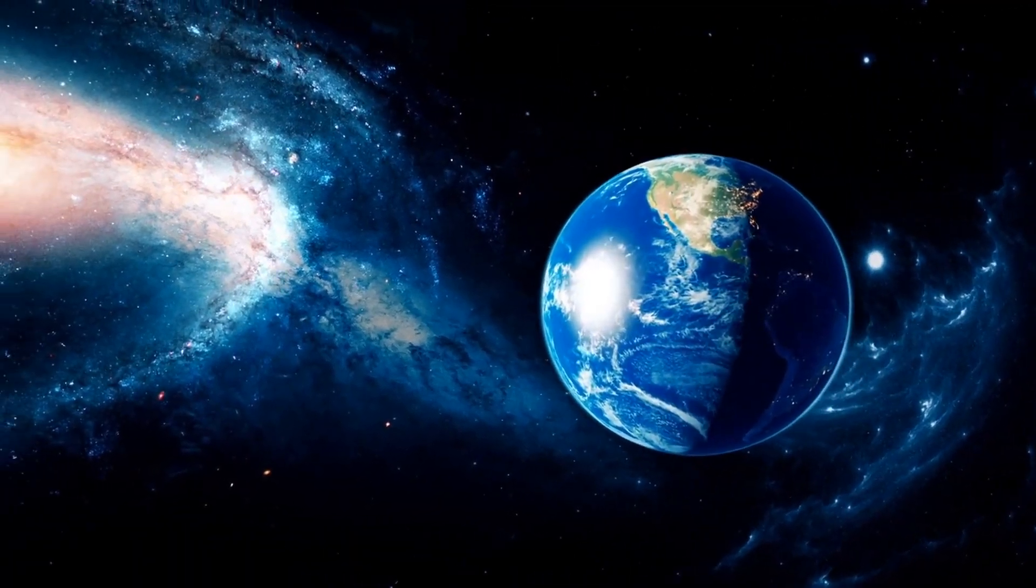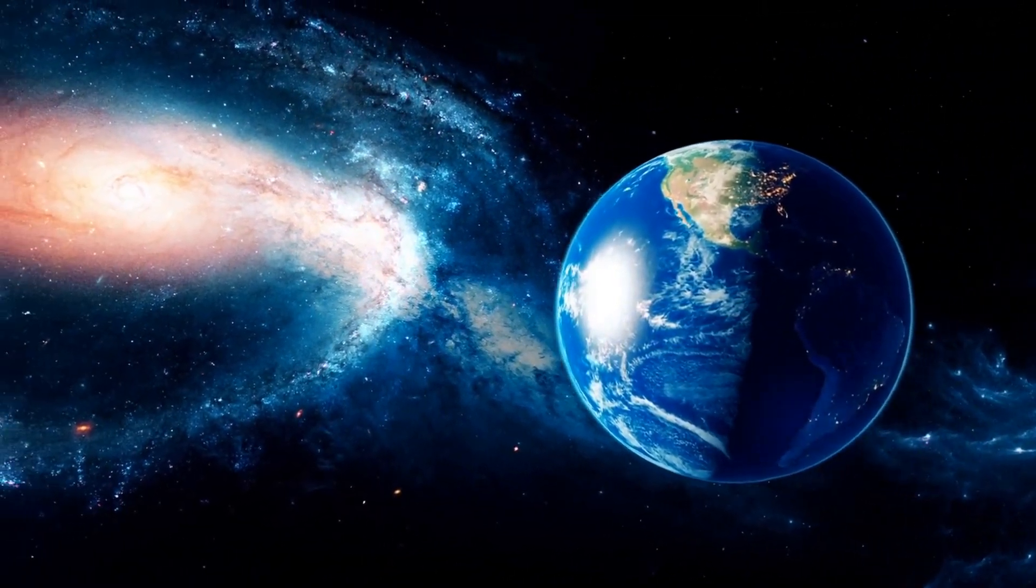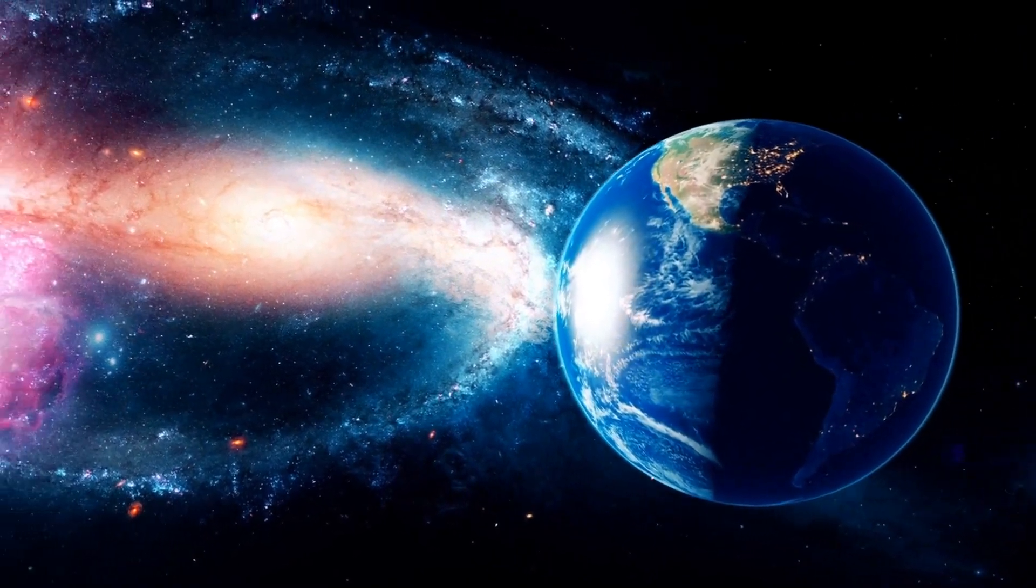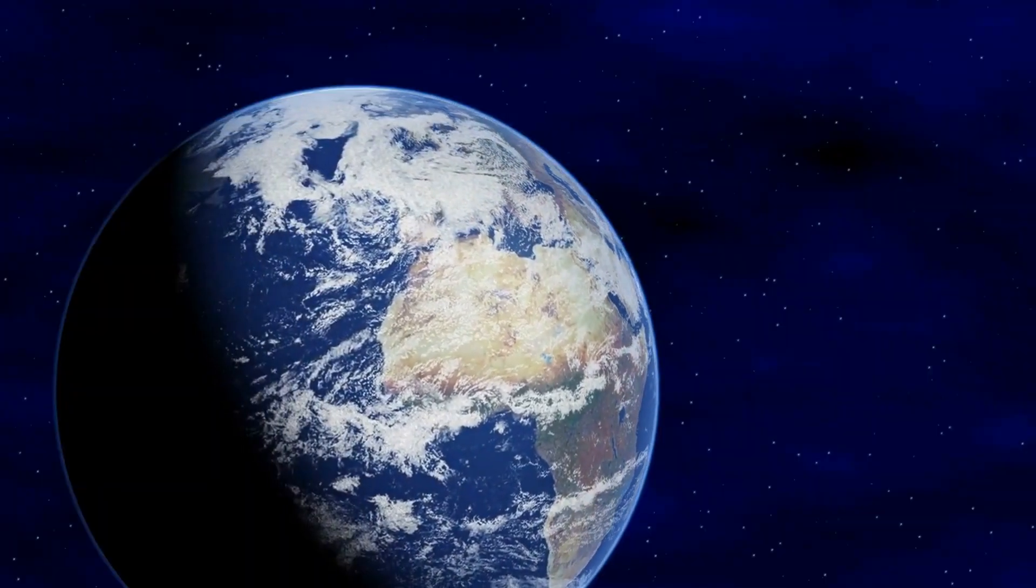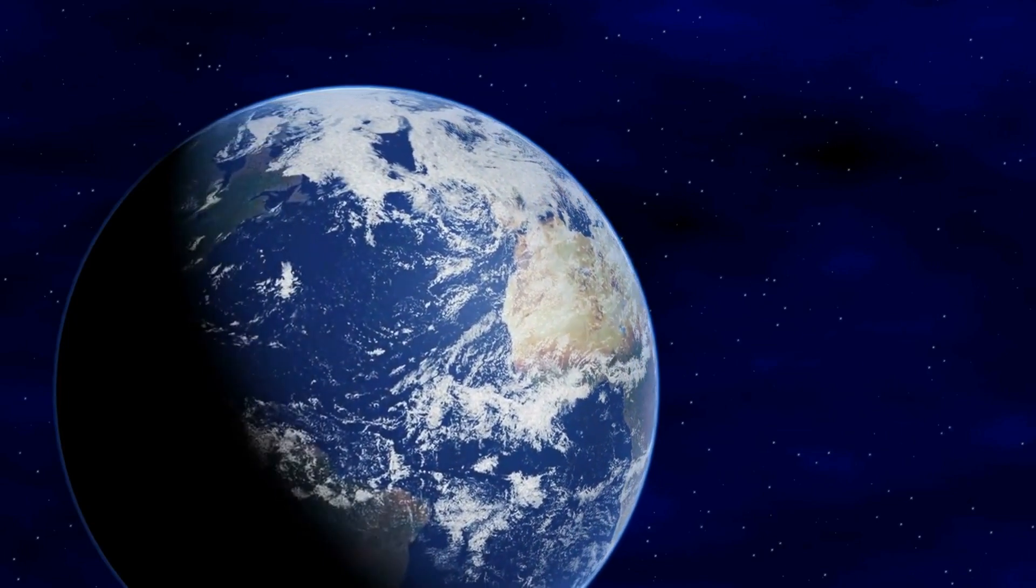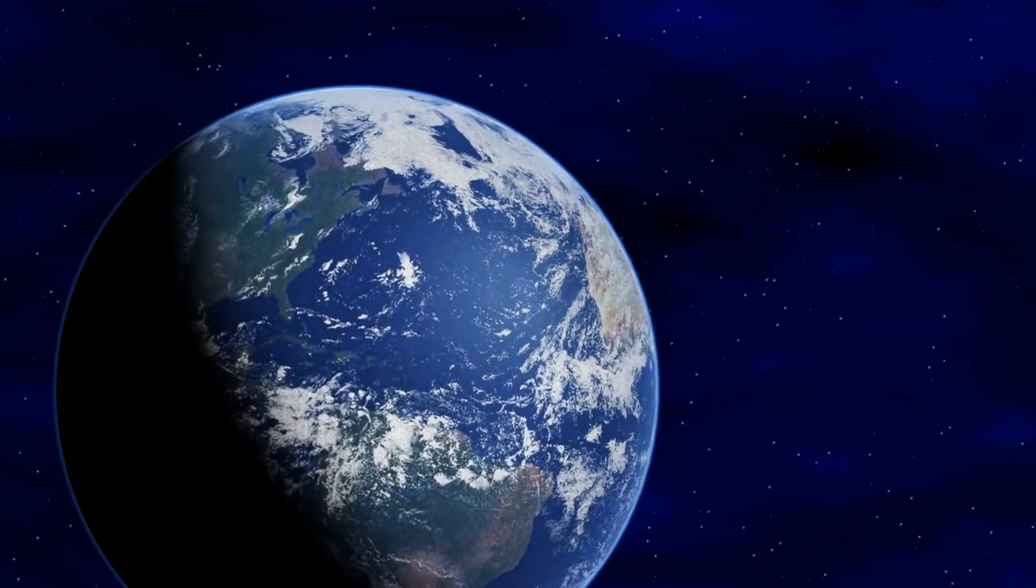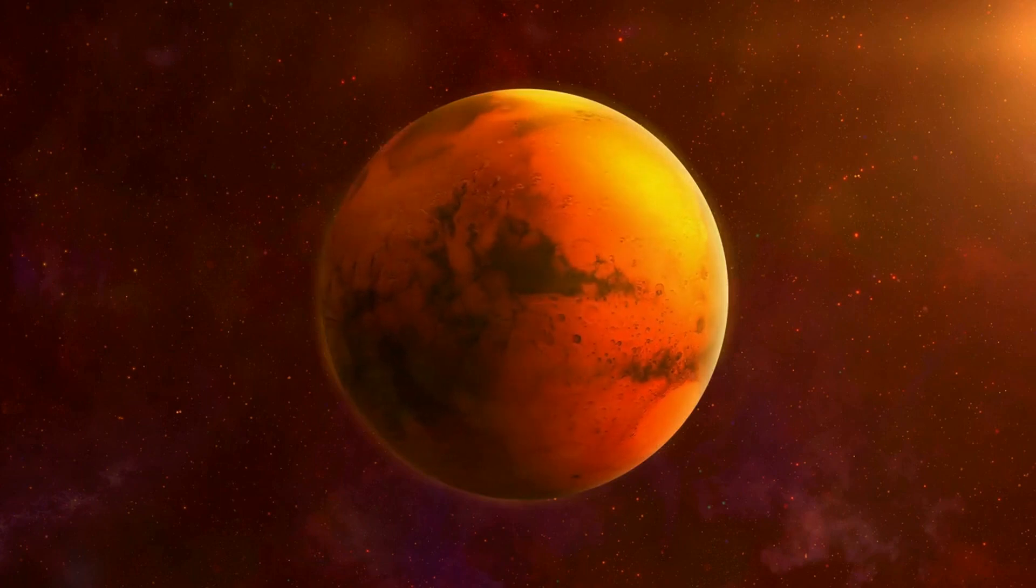The Earth is not a perfect sphere. Contrary to popular belief, the Earth is not a perfect sphere. It's actually an oblate spheroid, meaning it's slightly flattened at the poles and bulging at the equator. This is due to the centrifugal force caused by the Earth's rotation.